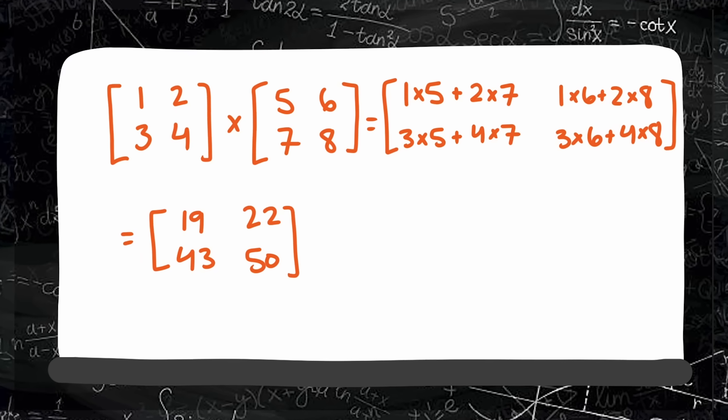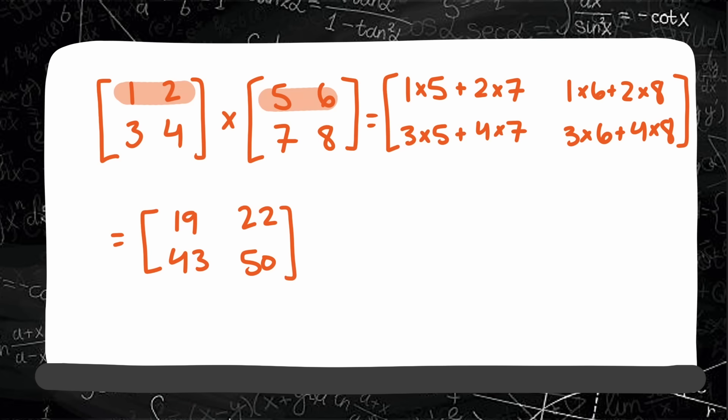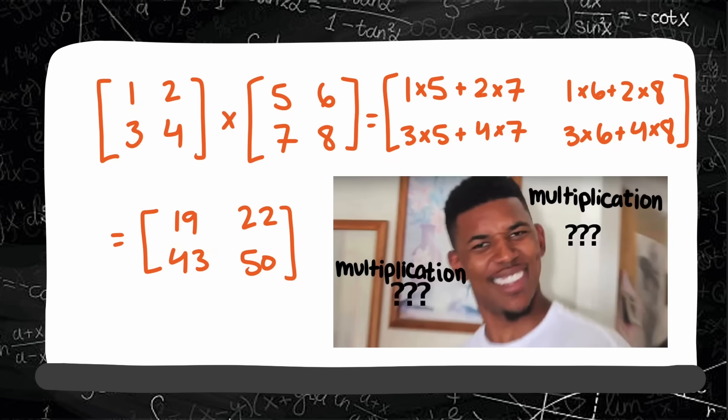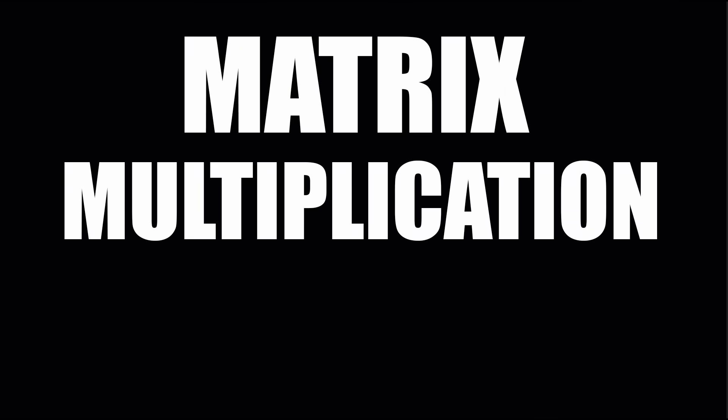Have you ever wondered why we multiply matrices the weird way we do? Why not just row to row or column to column? And honestly, why is it even called multiplication when it feels like there is just so much addition going on? It seems bizarre, until you zoom out and see what matrix multiplication is actually doing.